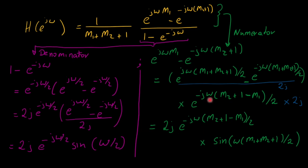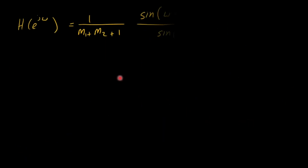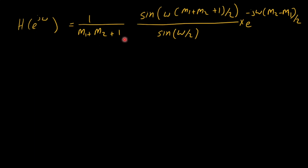Combining numerator and denominator, the 2j terms cancel and the e^{jω/2} terms cancel, leaving the final simplified frequency response: H(e^{jω}) = (1/(m1+m2+1)) · sin(ω(m1+m2+1)/2) / sin(ω/2) · e^{−jω(m2−m1)/2}.